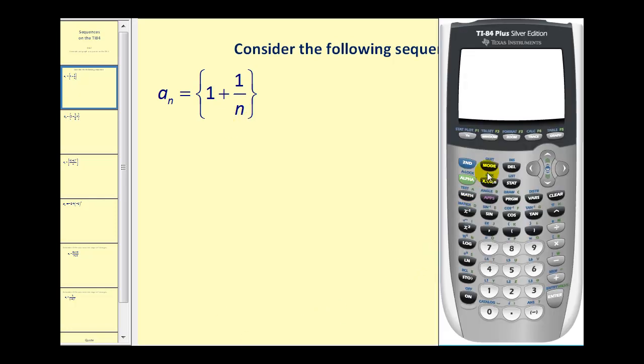The first thing we should do is put our graphing calculator in sequence mode. If we press the mode key, if you look at the fourth row, this last option, SEQ, is for sequence mode. Let's go ahead and do that. So just move the cursor down there and highlight sequence, press enter, and then we can go ahead and go back to the home screen.